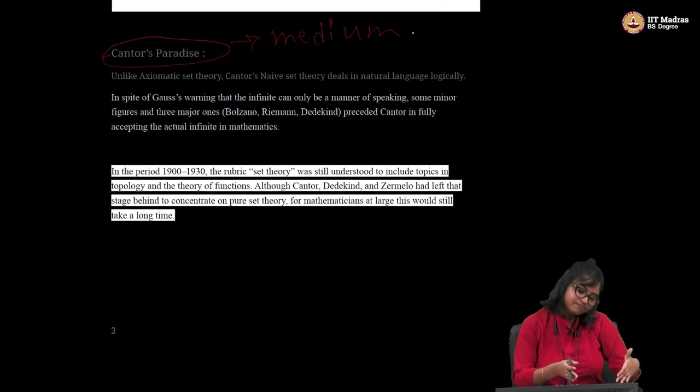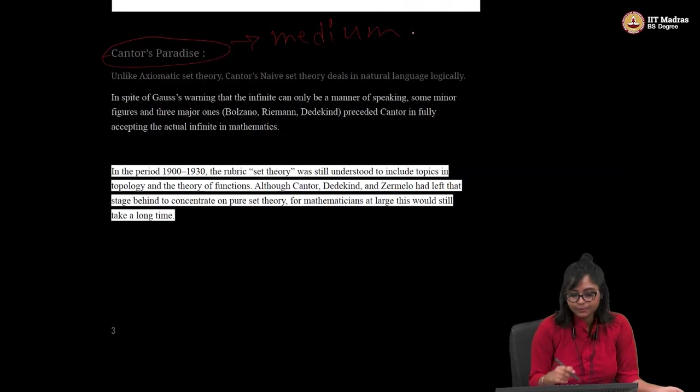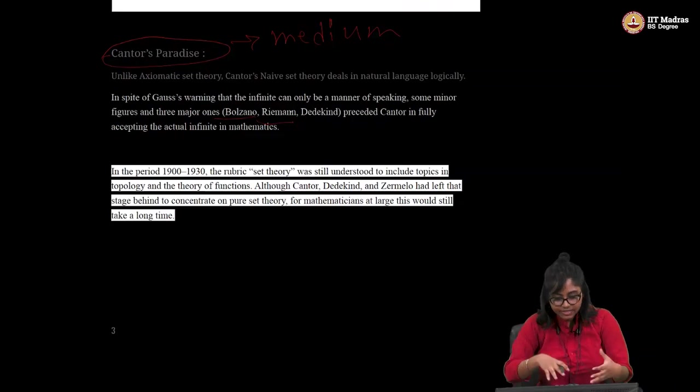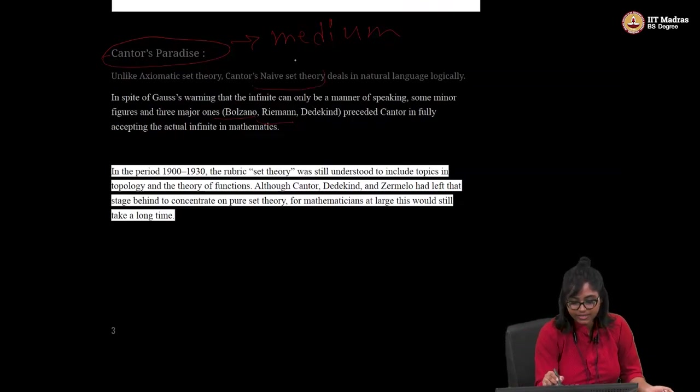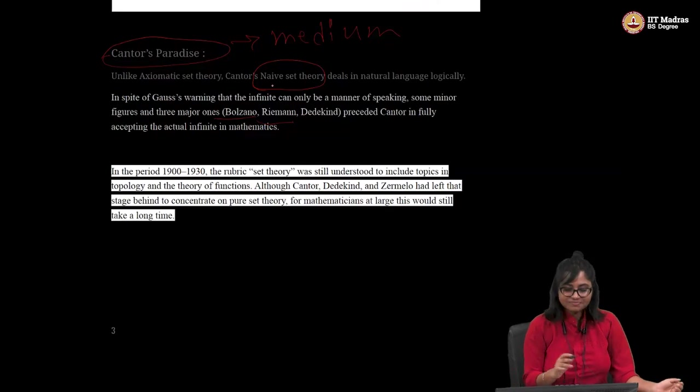But before George Cantor, there was this taboo for infinity. Everyone thought it is something unimaginable. After Cantor came into play also Zermelo-Fraenkel, they also gave some very good contribution in it. So after he came into play, he derived this very nice set theory called naive set theory. So there are two kinds of set theory. One is axiomatic set theory that deals with boring, not boring, but interesting proofs and proper theorems with notations and everything. But Cantor's naive set theory just deals with very basic logic. He defines everything in natural language, just as I am defining like that. So probably you can check it out.